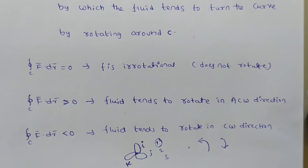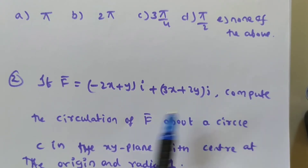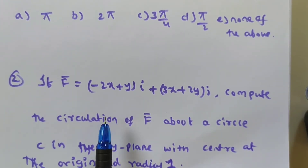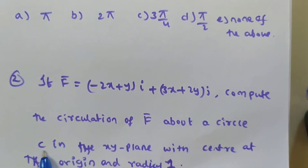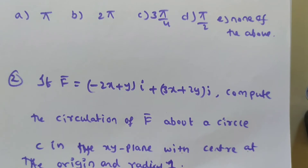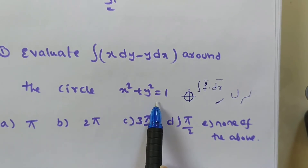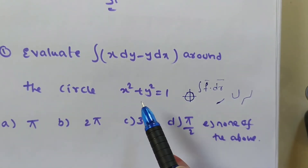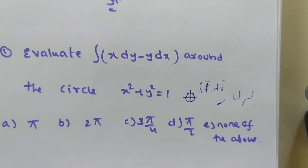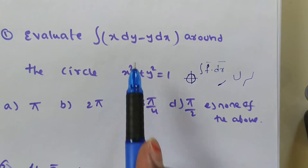Now we will solve problems on f̄ · dr̄ around closed curves. Given f̄ = (-2x + y)î + (3x + 2y)ĵ, compute the circulation of f̄ about the circle C in the xy-plane with center at the origin and radius 1. This is the unit circle x² + y² = 1, same as the previous problem, but here f̄ is given separately.